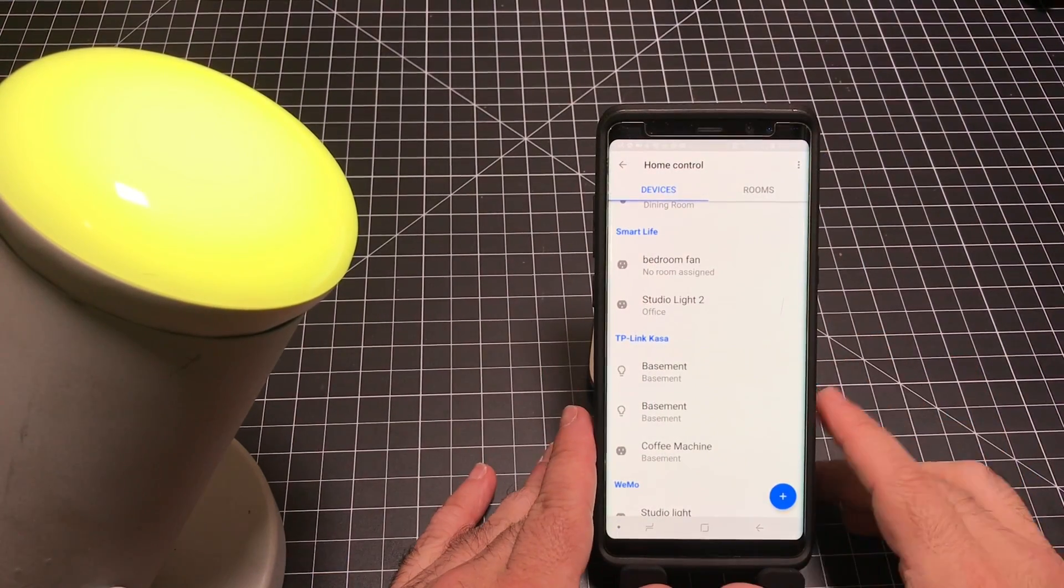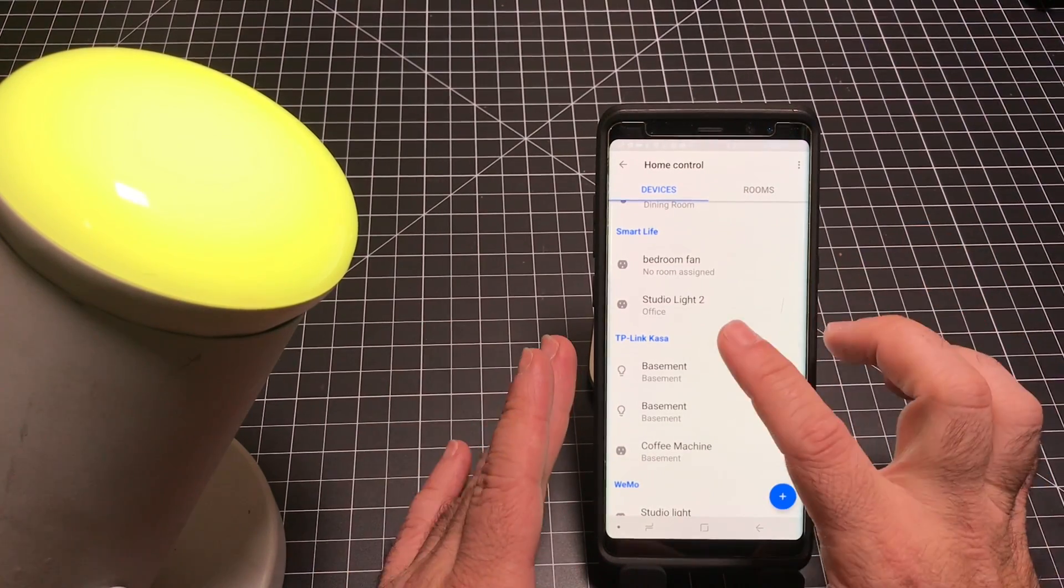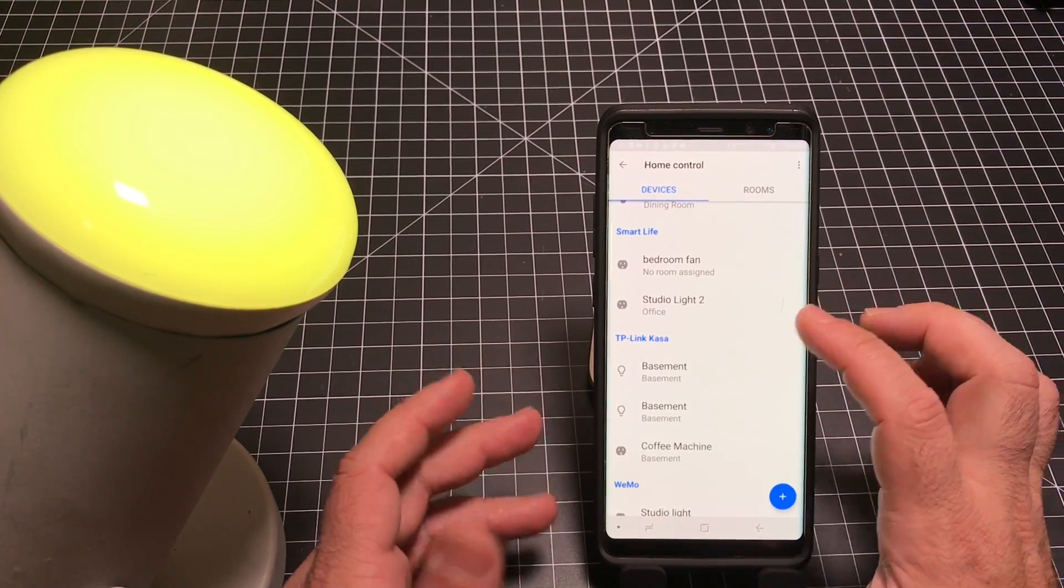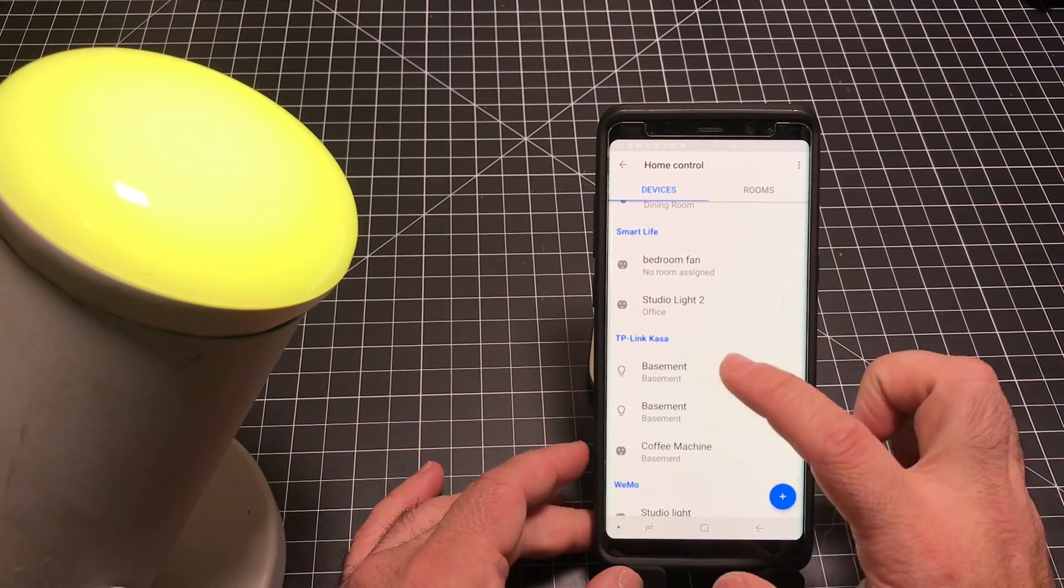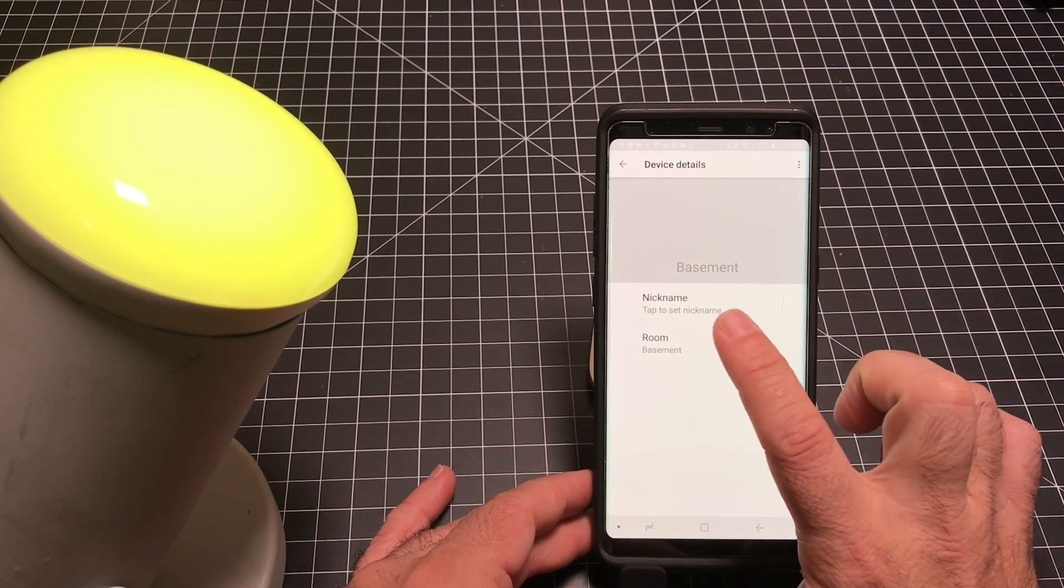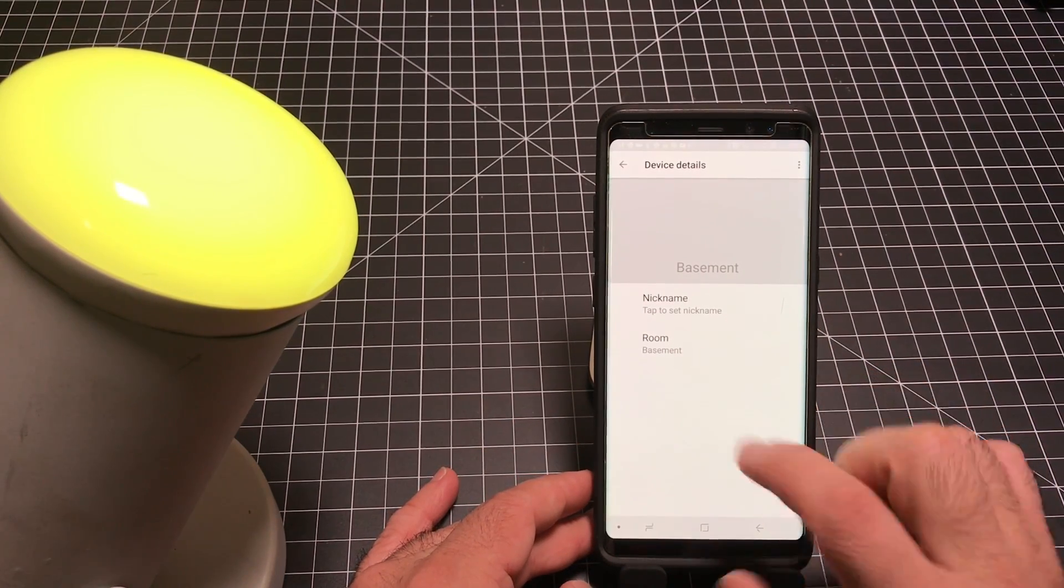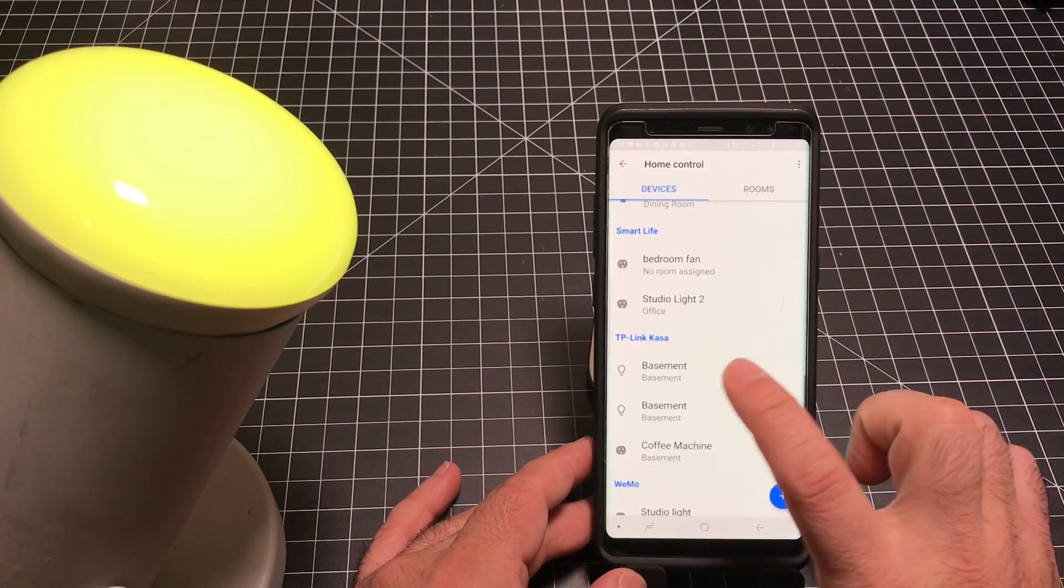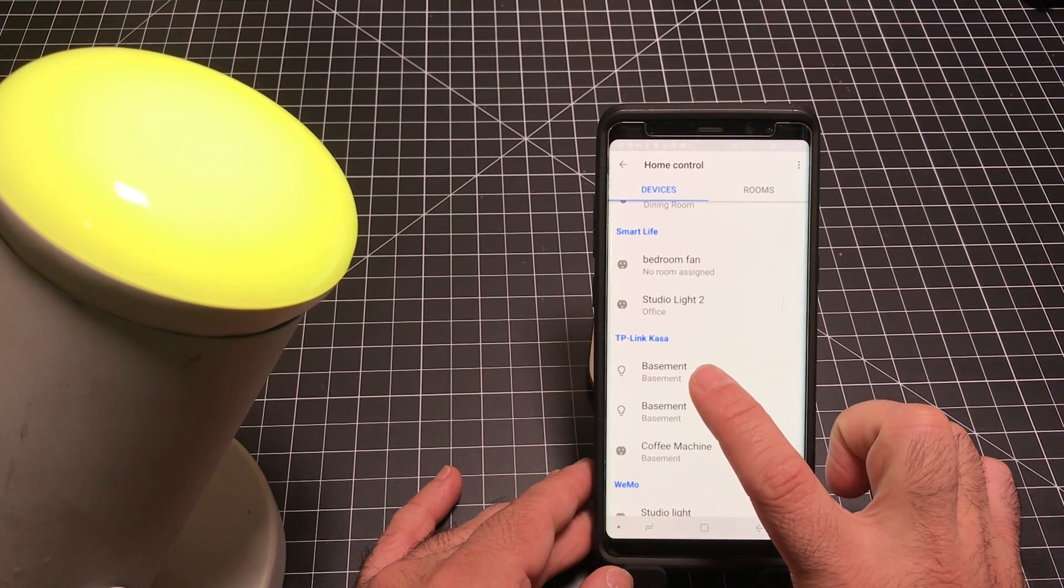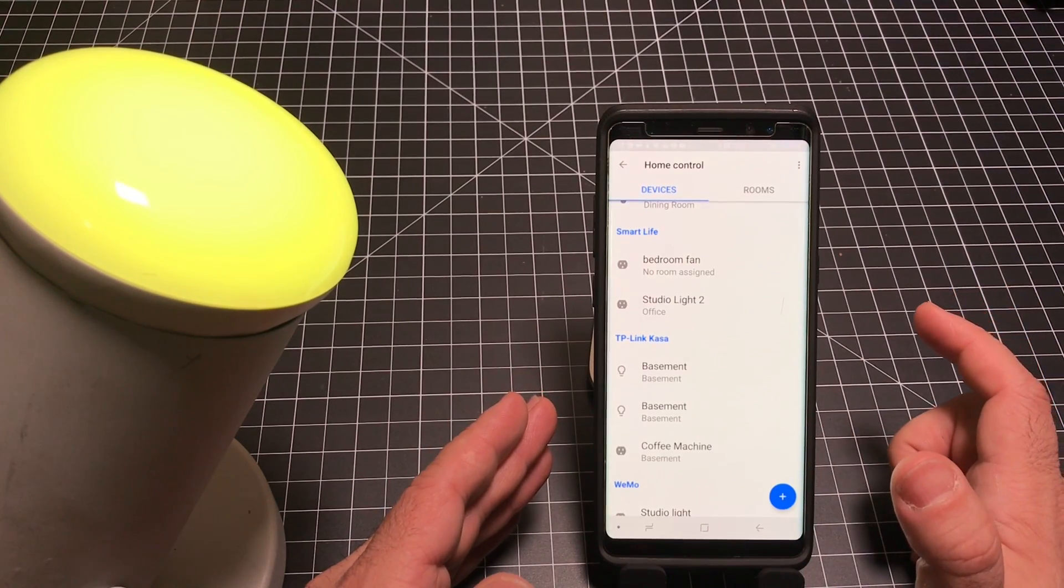Now, once you've authenticated your TP-Link information, your account information, you're going to just choose the bulb or the device, and then you're going to come to the screen. And you'll notice that within Google home, all you do is indicate the name of the product, your nickname, and then also the room that it's in. So here I have my nickname is basement. And then also the location is basement. So that way, I can use my voice to control the lights.